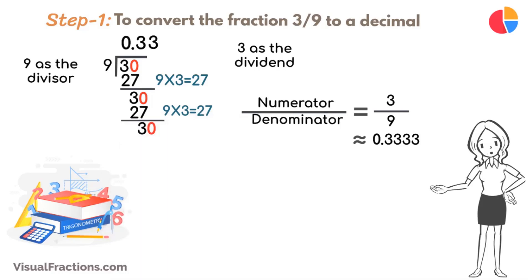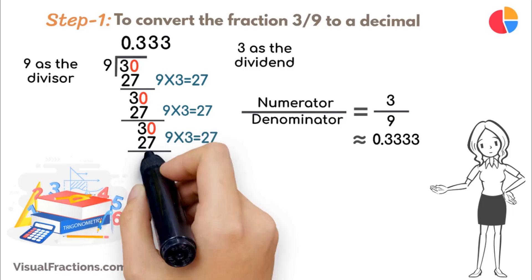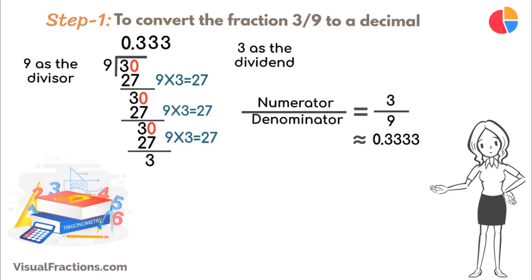This pattern continues with the remainder consistently returning to 3, and the same calculation repeating. Each time, 9 goes into 3, 3 times, adding more 3s in the quotient, establishing a repeating decimal sequence. Thus, the decimal extends as 0.3333, and so forth.